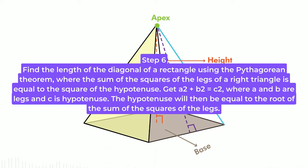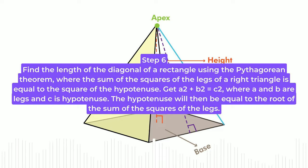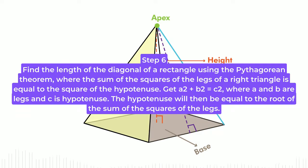Step 6. Find the length of the diagonal of a rectangle using the Pythagorean theorem, where the sum of the squares of the legs of a right triangle is equal to the square of the hypotenuse. Get A² plus B² equals C², where A and B are legs, and C is hypotenuse. The hypotenuse will then be equal to the root of the sum of the squares of the legs.